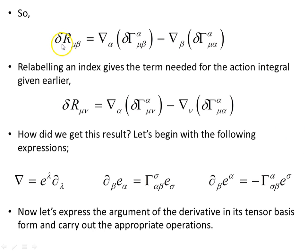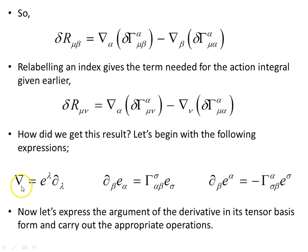To see how that last term in the action integral goes to zero, we need some preliminary information. The nabla (∇) operator in component form is a contravariant basis vector times the partial derivative. The affine connections relate to partial derivatives of the basis vectors: the partial derivative of the covariant basis vector gives one affine connection term, and the partial derivative of the contravariant basis vector gives another. We want to express the argument of the derivative in its tensor basis form and carry out the appropriate operations.